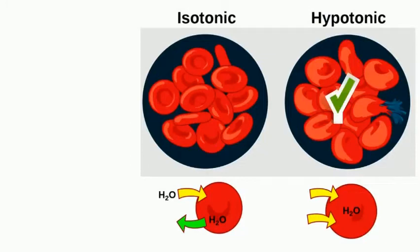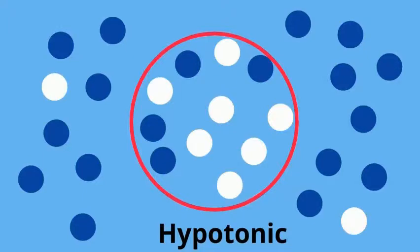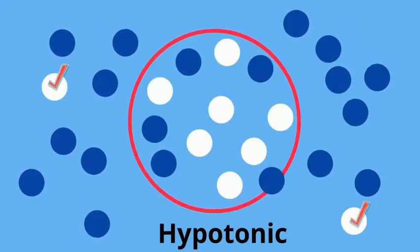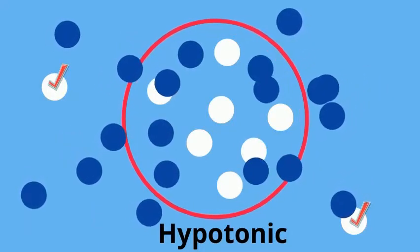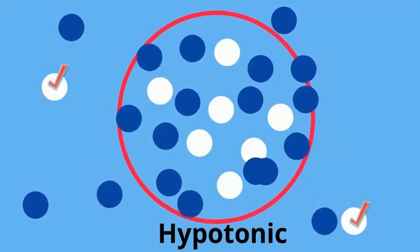Now, hypotonic, hypo meaning below, tonic meaning strength. Notice there is very little solute outside the cell and a higher concentration of solvent outside the cell. So the solvent flows into the cell, remember high to low, and the cell will expand.